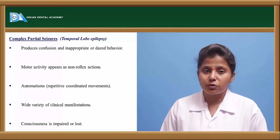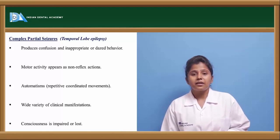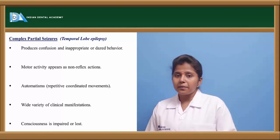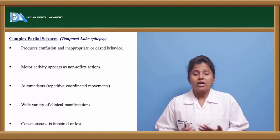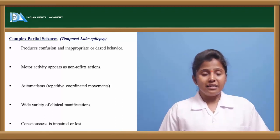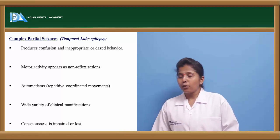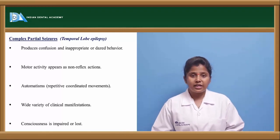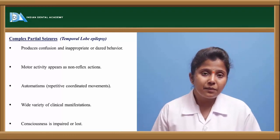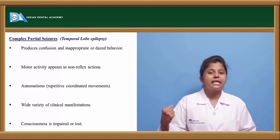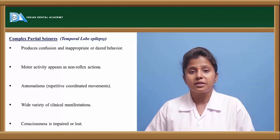Complex partial seizures are also called temporal lobe epilepsy. As the name indicates, it is caused by impairment of the temporal lobe. This epilepsy leads to confusion, improper or bizarre behavior, and impaired motor activity. It causes repetitive, coordinated movements — the hand, leg, and whole body movements are in a repetitive mode. Consciousness is impaired or lost; the person becomes unconscious.